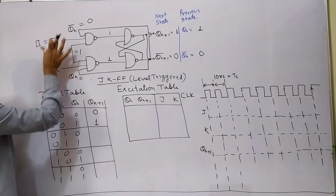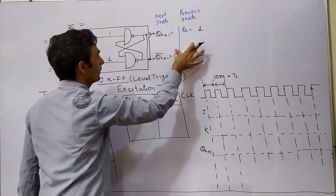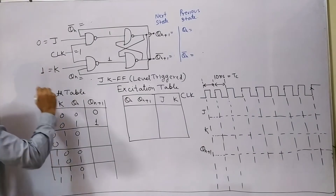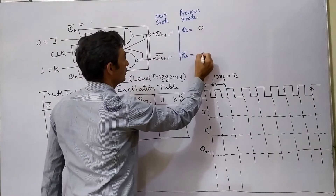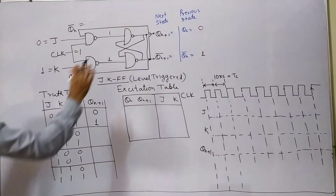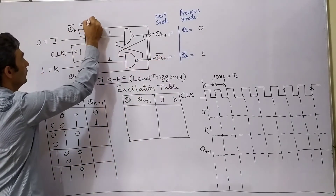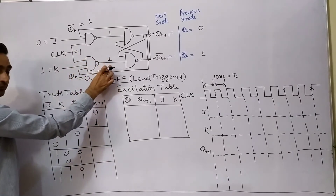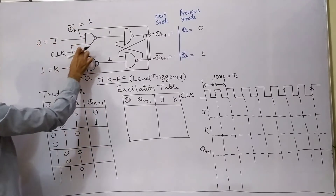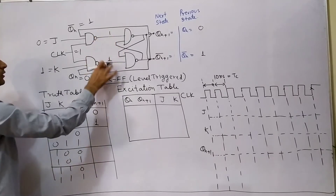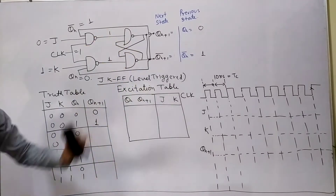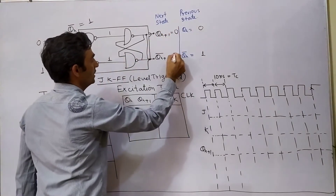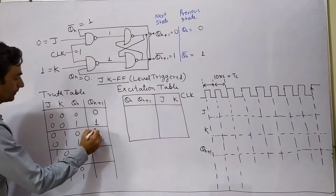Now take the third case: J=0, K=1, QN=0. So QN bar will equal 1. Putting all values into the circuit: QN bar equals 1, QN equals 0. At the inputs we get 0, 1, 1 — any input going to 0 means output is 1. Then 1, 0, 1 — this will be 1. When both legs carry 1, 1, output will not change. And hence it will stay at 0 — output will be 0.